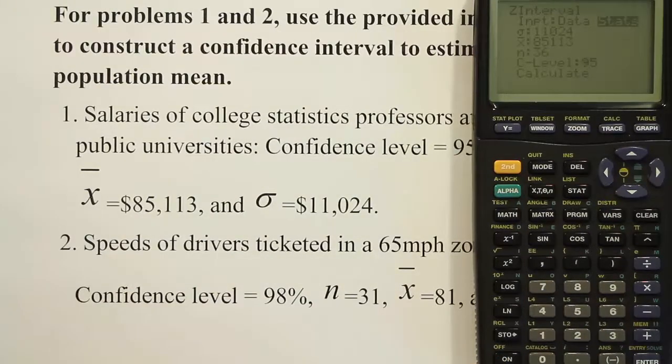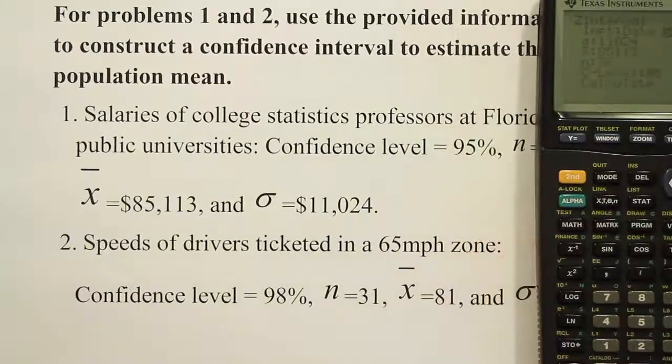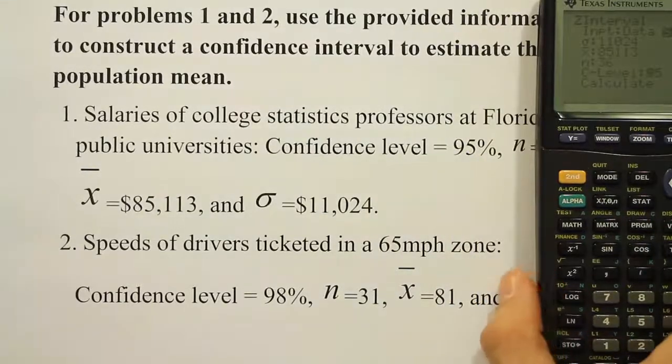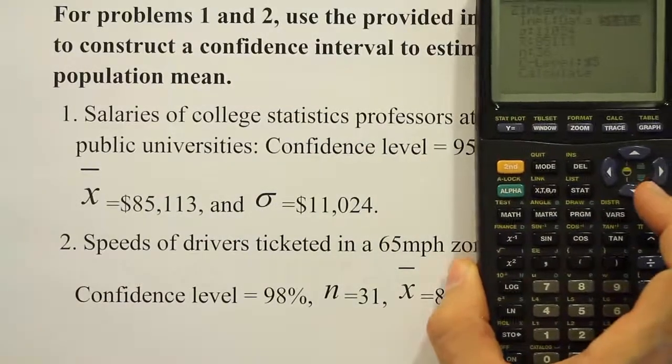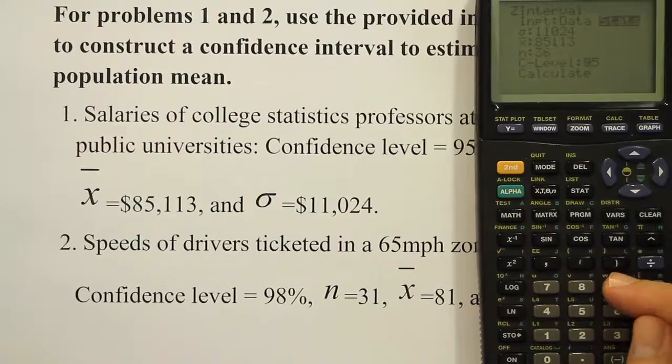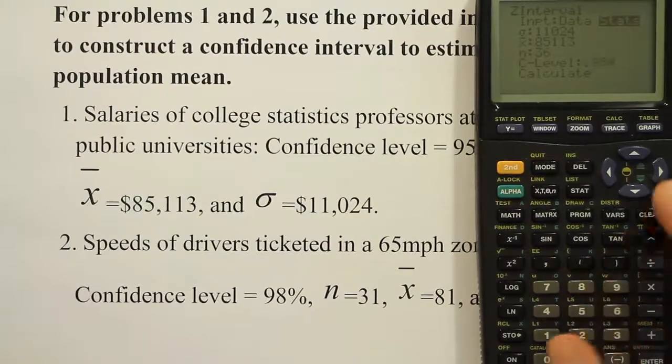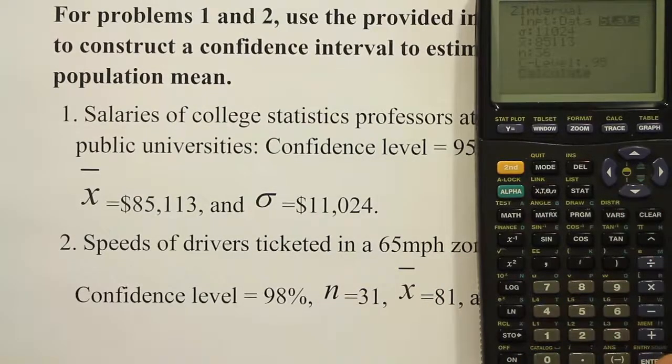So type 36 for n and then down to the confidence level. Now in this case, the confidence level for our problem is 95%, so we'll go ahead and enter that in as well. So we enter 95 or 0.95, come down here where it says calculate, press enter, and that's it.